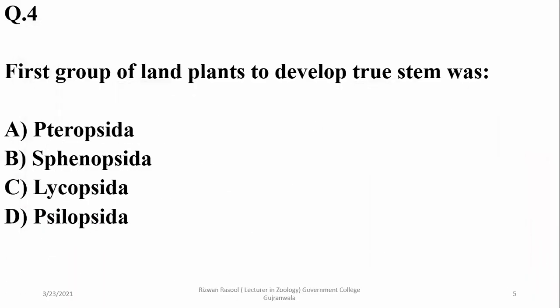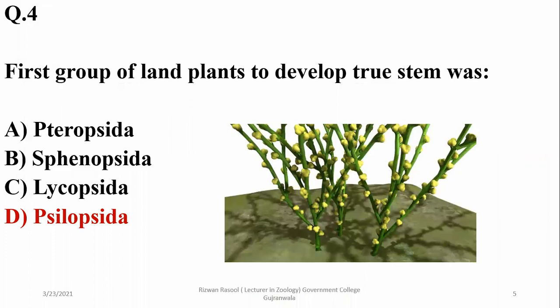The first group of plants to develop a true stem was Psilopsida. Lycoposida developed true stem, true roots, as well as true leaves, but Psilopsida developed a true stem for the first time in the evolutionary history of plants.